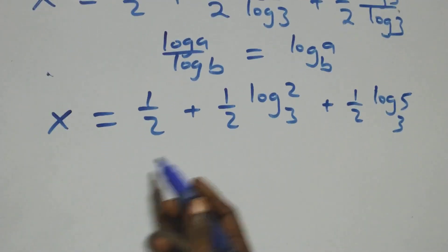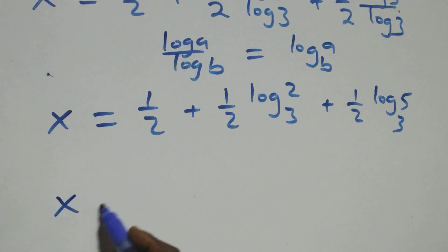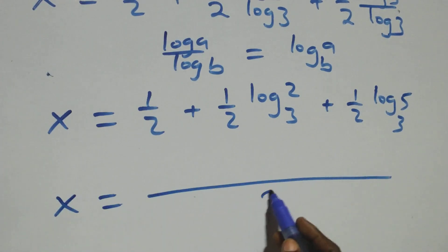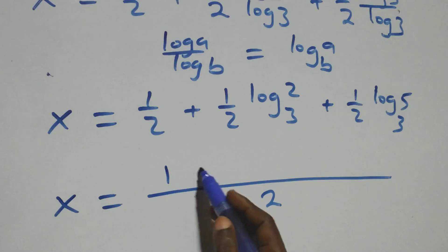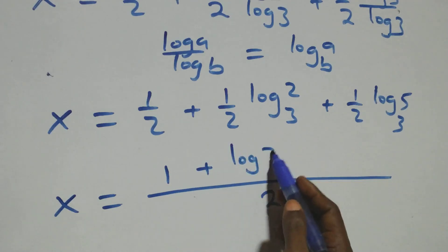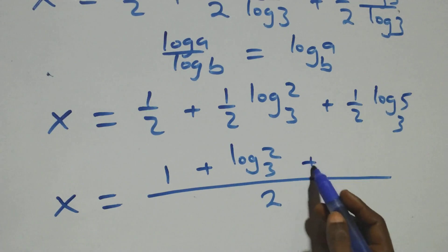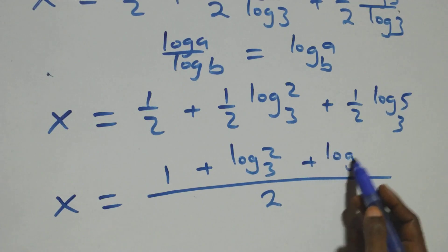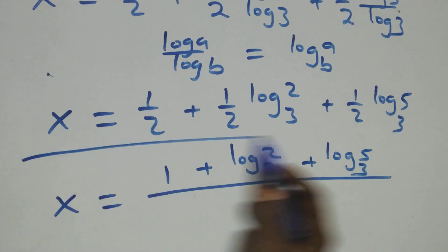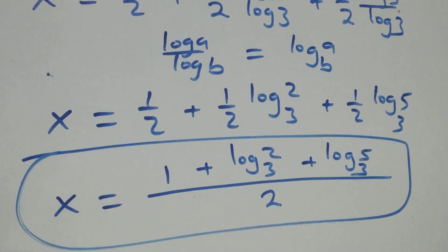We bring these fractions together over the common denominator 2, giving x equals (1 plus log 2 base 3 plus log 5 base 3) all over 2.